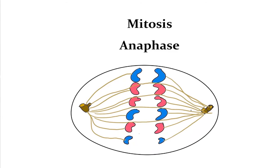Next we get into anaphase. During anaphase, the spindle fibers push against each other through the microtubules, elongating the cell, but also dragging each sister chromatid to each side. The sister chromatids are exact copies of each other, so you have one copy of one homolog going one way and the same copy going to the other side. The chromatids are being dragged by their kinetochores toward the center, creating a dragging appearance where the arms are being pulled behind.